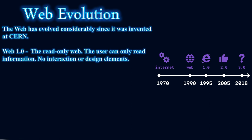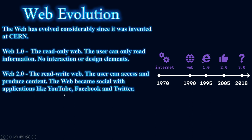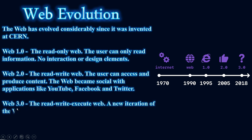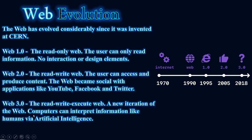The web has evolved considerably since its invention at CERN. Web 1.0 was the read-only web — users could only read information, with no interaction or design elements. Web 2.0 is the read-and-write web — users can access and produce content; the web became social with applications like YouTube, Facebook, and Twitter. Web 3.0 is the read-write-execute web — a new iteration where computers can interpret information like humans, incorporating artificial intelligence.